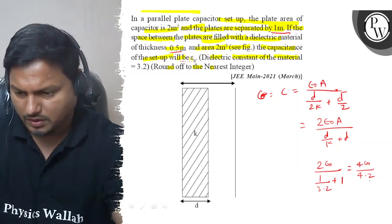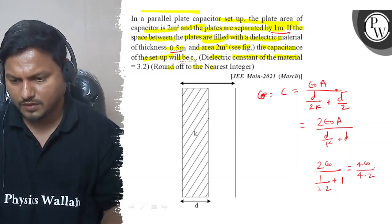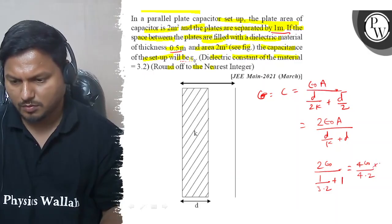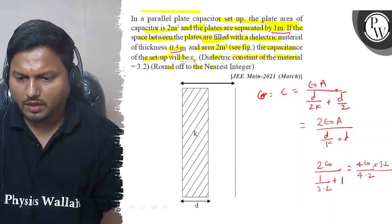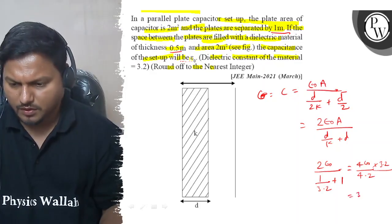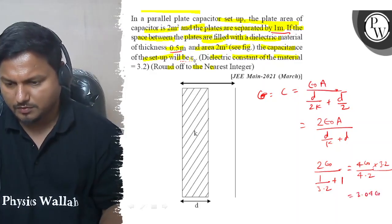This will become, or into 3.2, basically this will become 3.04 times epsilon 0.